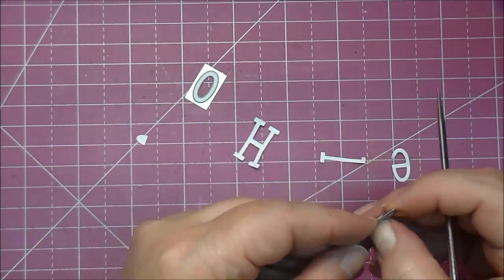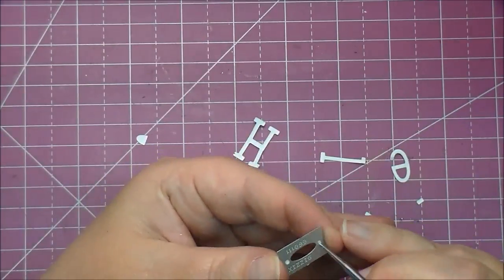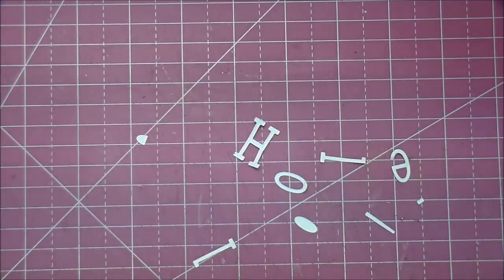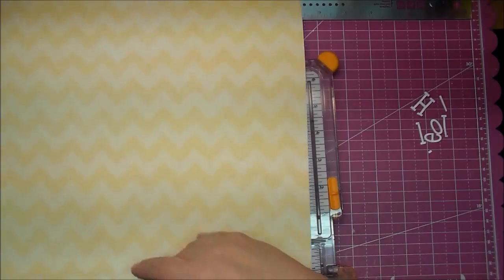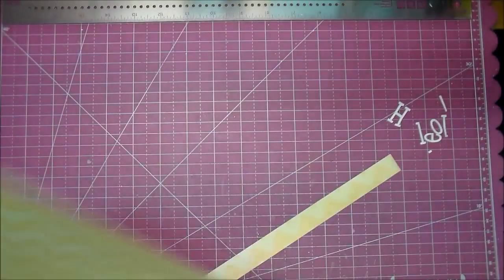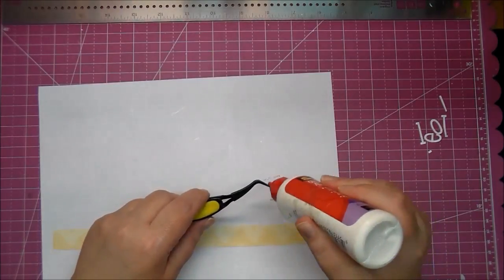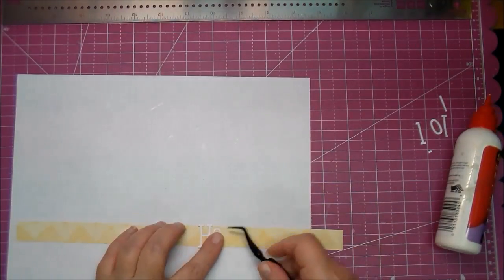Now I'm using another die, it's called Just a Note by Sizzix, and I'm pressing in those little circles with my paper piercer—it helps to release the paper from the die very nicely. This die comes with 69 dies; it has an uppercase and a lowercase plus lots of extras. I'm using a piece of paper from Bramble and Rose by My Mind's Eye. The yellow of it goes perfect with the cards that I'm making today. I'm just adding the word hello along with the exclamation point.